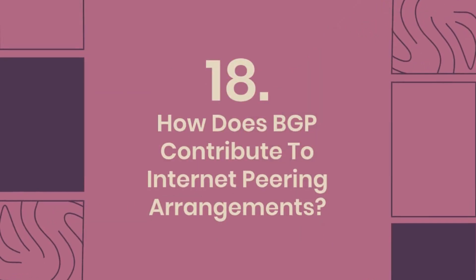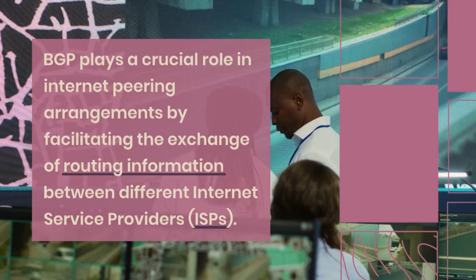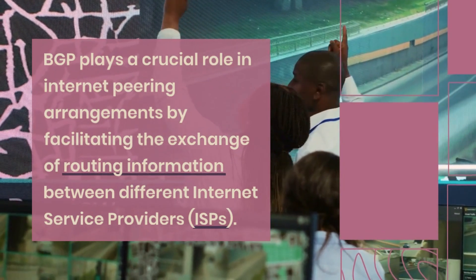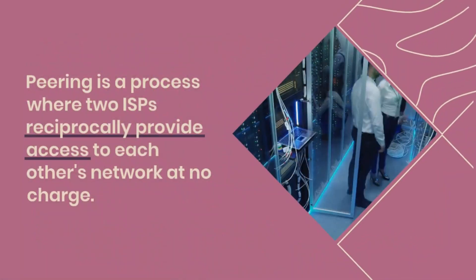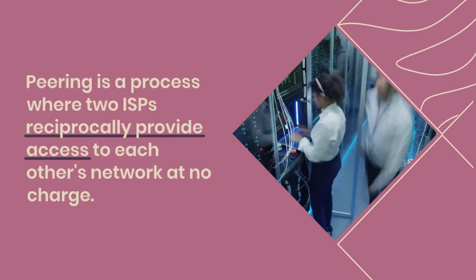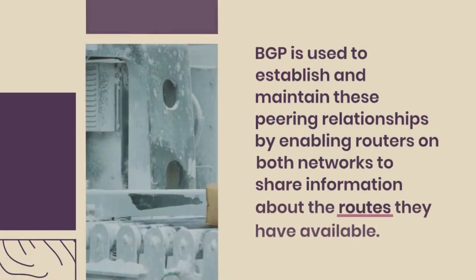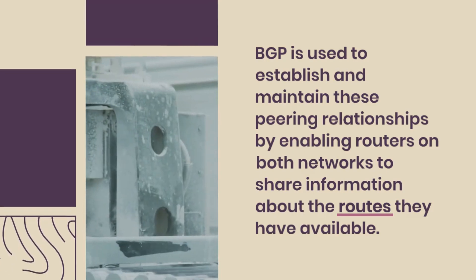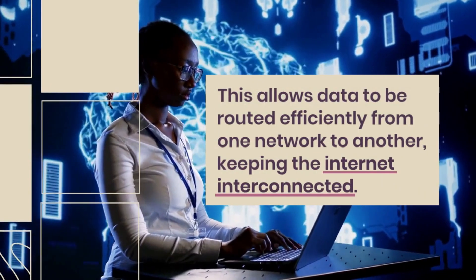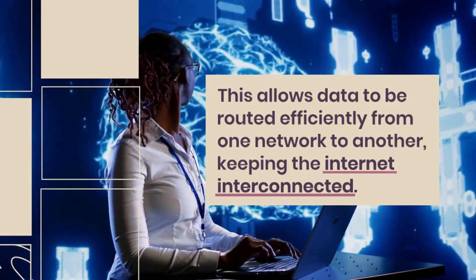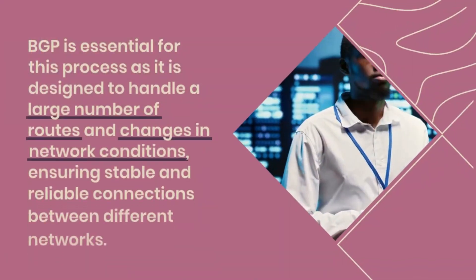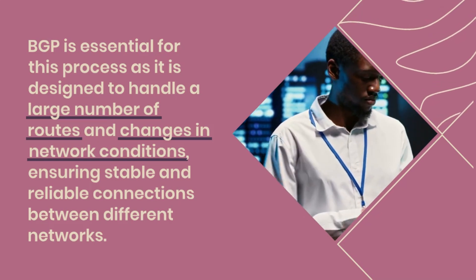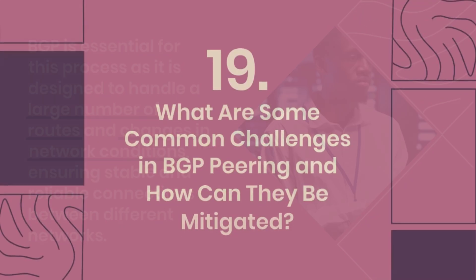How does BGP contribute to internet peering arrangements? BGP plays a crucial role in internet peering by facilitating the exchange of routing information between different Internet Service Providers, ISPs. Peering is a process where two ISPs reciprocally provide access to each other's network at no charge. BGP establishes and maintains these peering relationships by enabling routers on both networks to share available route information, allowing data to be routed efficiently and keeping the internet interconnected. BGP is essential for this as it handles a large number of routes and network condition changes, ensuring stable and reliable connections.